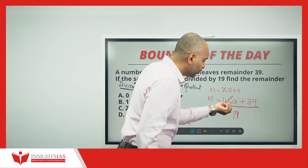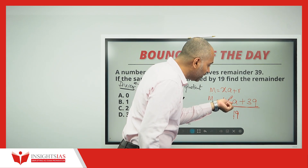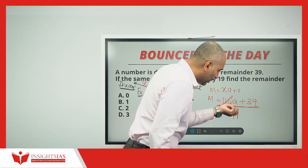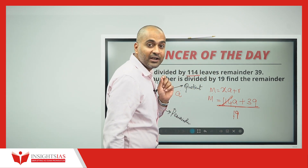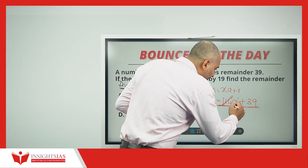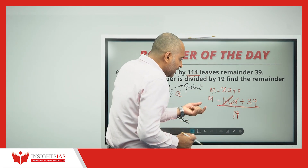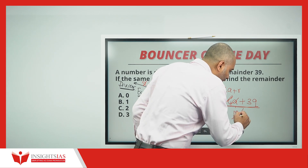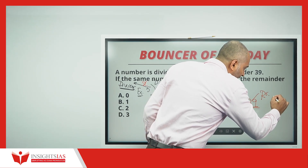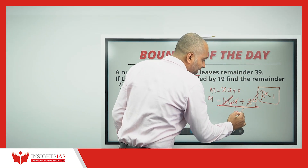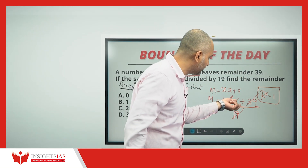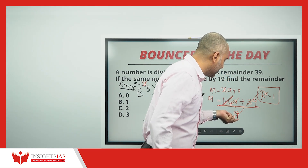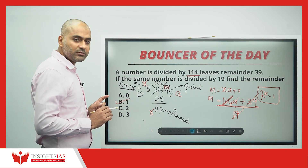So when you divide 114 by 19, 114 multiplied by any positive or negative integer will get completely divided by 19. That means the 114a part of the number is fully divisible. Now check 39: when I divide 39 by 19, it is not going to divide completely. 19 times 2 is 38, so the remainder is 1. Therefore, when dividing the whole number by 19, the remainder will be 1.